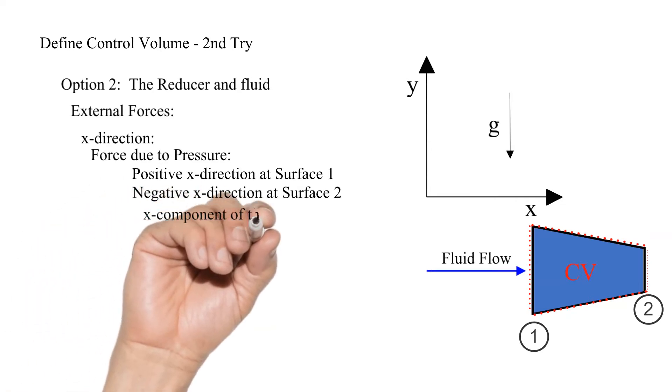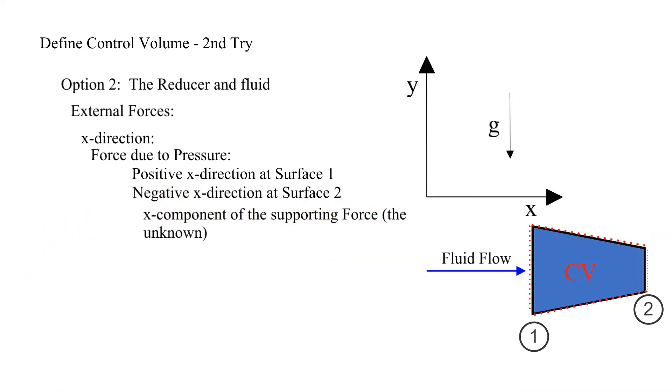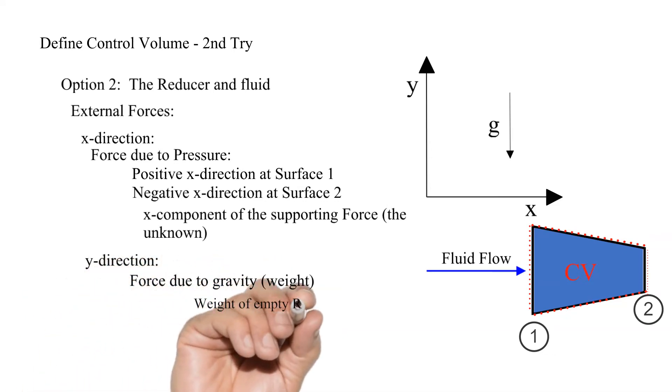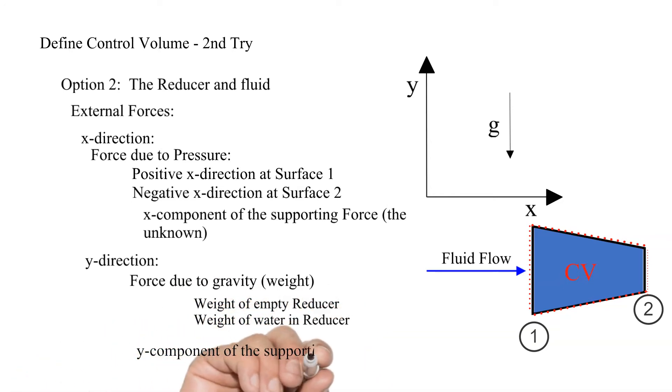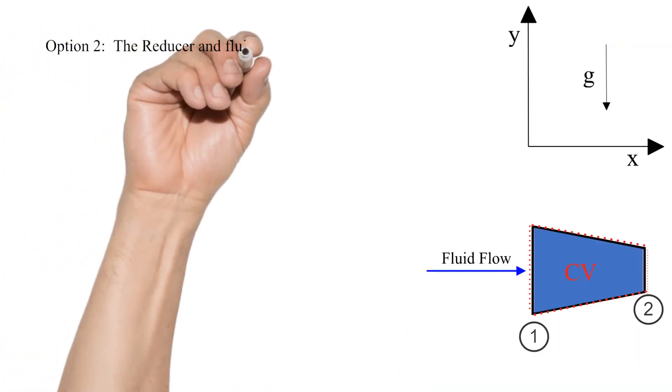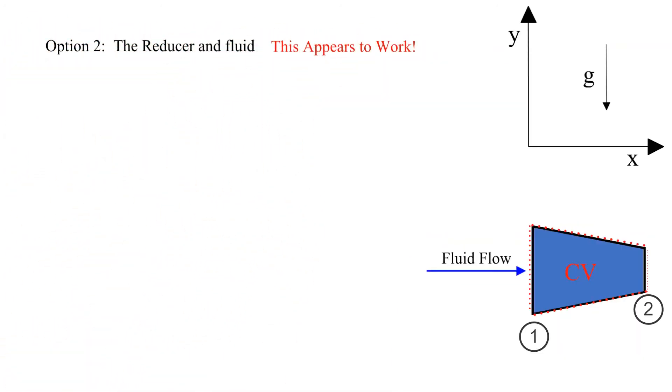We have an x component of the supporting force acting on the reducer, this force is unknown. Now let's proceed to the y direction. Force due to gravity, weight of the reducer and weight of the fluid. We also have a y component of the supporting force acting on the reducer. Option two selecting both the reducer and the fluid as the control volume seems to work. But does it?